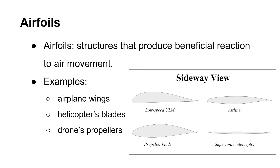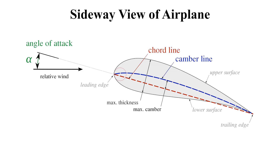The next important concept to cover is stall. Let's take a look at an aircraft's wings and how they produce lift. Airplane wings, the blades of a helicopter, and a drone's propellers are called airfoils. Airfoils are structures that produce a beneficial reaction to air movement, such as lift. Consider the sideways view of an airplane and its wings.